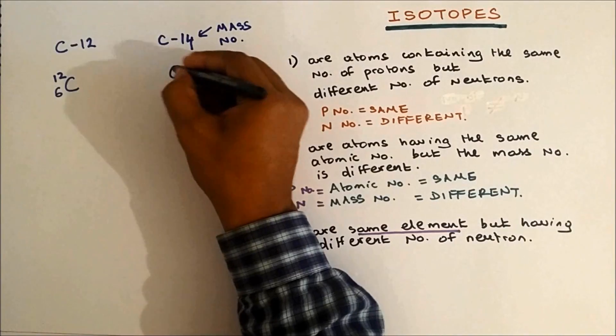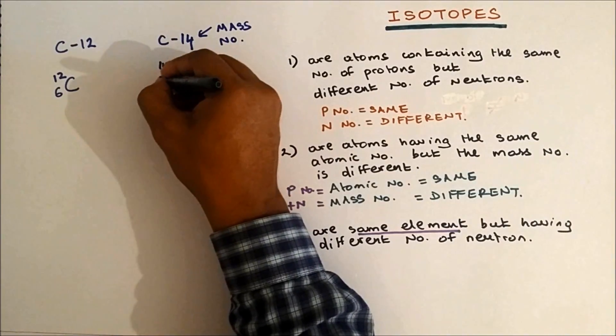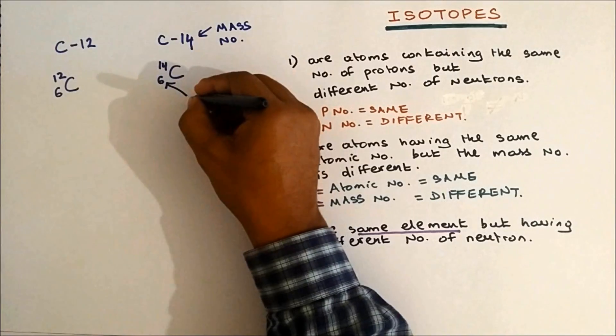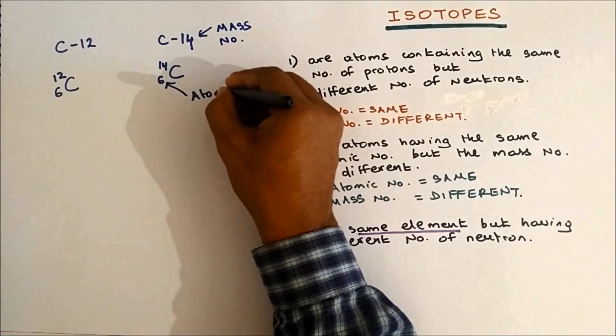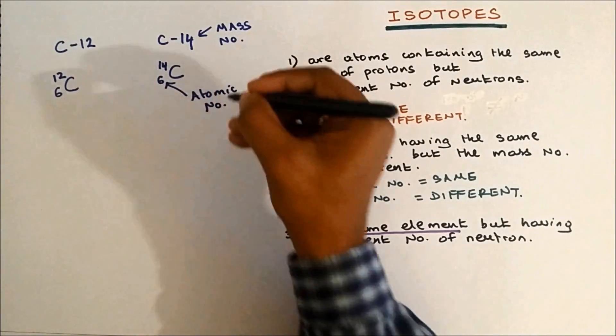So it can be written as 12 on the top, which is mass number, and then 6 at the bottom, which is the atomic number. Same here: 14 and then 6.